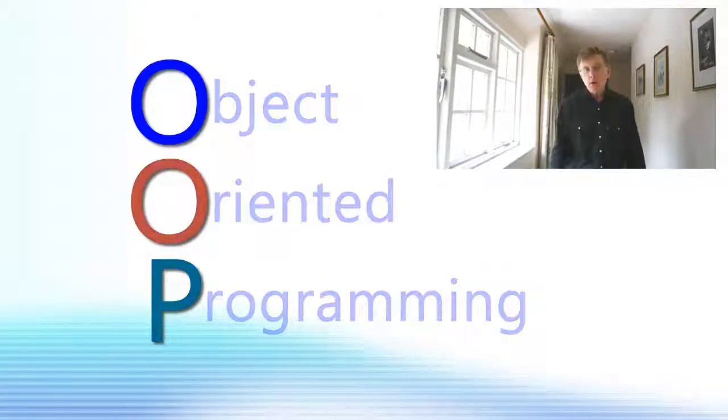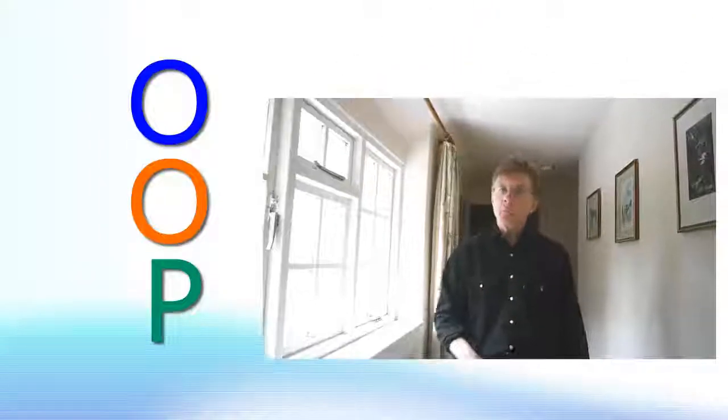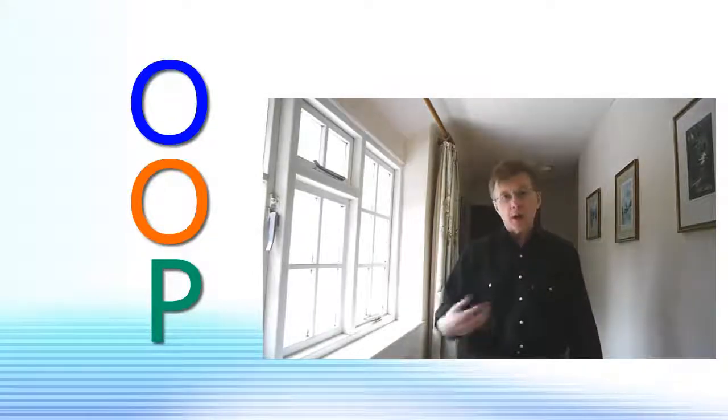In programming normally you have data that's wrapped up inside something—a structure or record—that's traditional procedural programming. And then when you want to act on that data you have functions, and they're separate from the data itself. Well, in object orientation the behavior—that's the functions or the methods—are wrapped up inside a certain chunk which contains also the data that they act on, the variables that they act upon, and that's called an object.